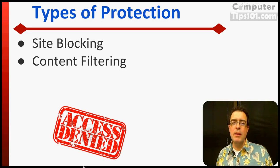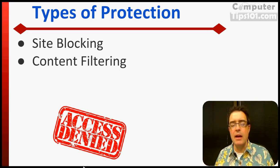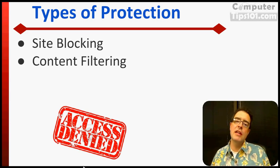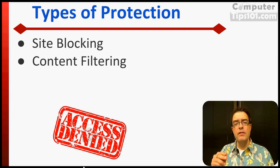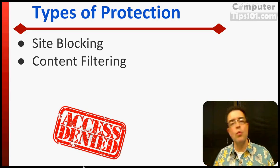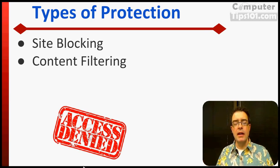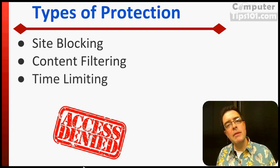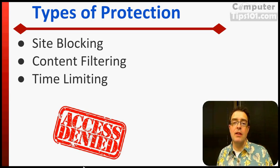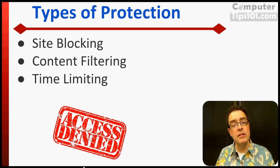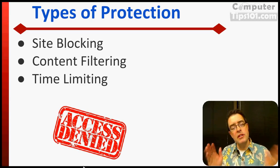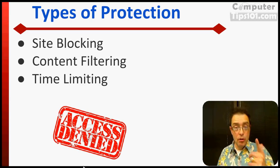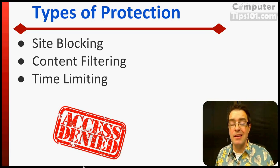Next is content filtering, because you can't always block every site. There's new sites coming up all the time, so content filtering means the software can actually look at the text on the page, and if it sees curse words or other certain words that might be inappropriate, it can block access to those. It can also limit the time they're on the internet — for example, at 10 o'clock, no more internet until 7 a.m. the next morning. So you can set restrictions so that at 2 a.m. during a sleepover, while you're asleep, they can't go and access something.